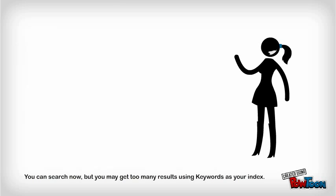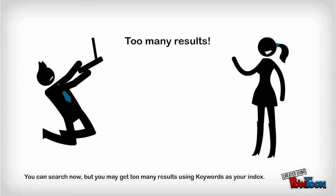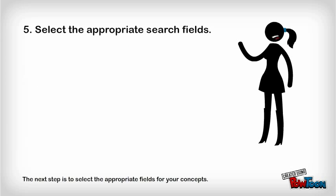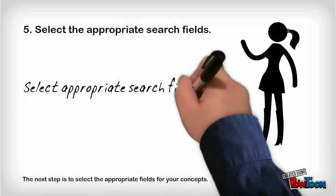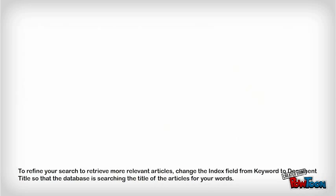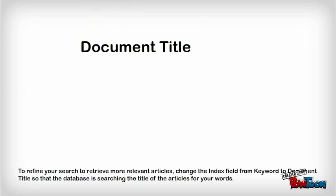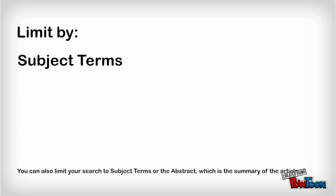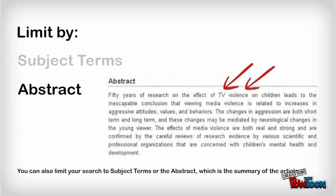You can search now, but you may get too many results using keywords as your index. The next step is to select the appropriate fields for your concepts. To refine your search and retrieve more relevant articles, change the index field from keyword to document title so that the database is searching the title of the articles for your words. You can also limit your search to subject terms or the abstract, which is the summary of the article.